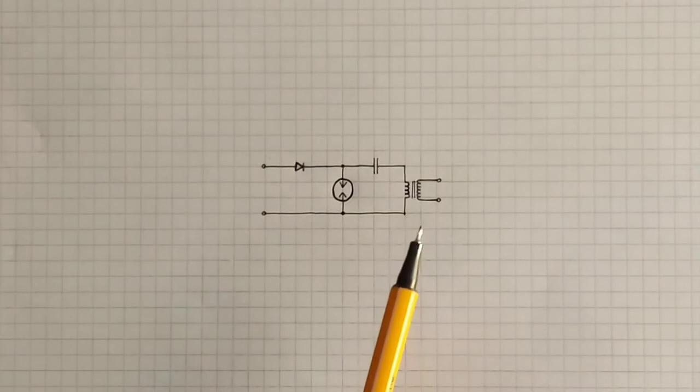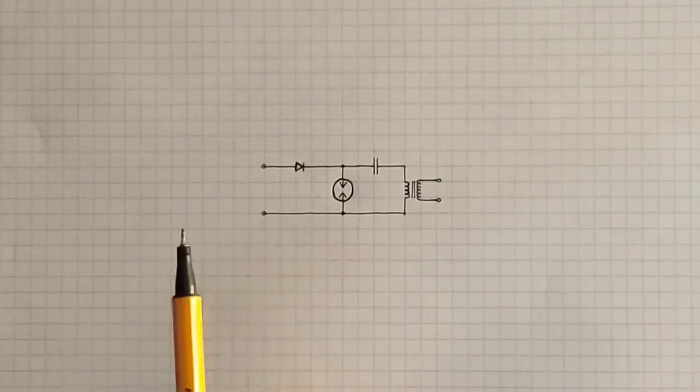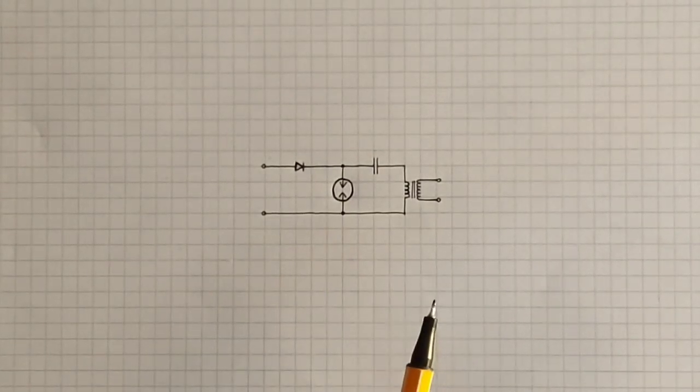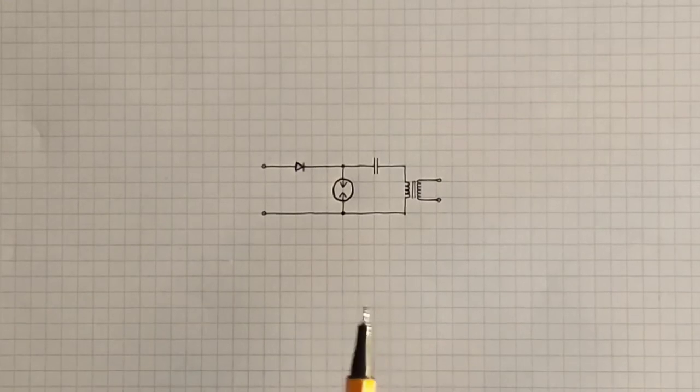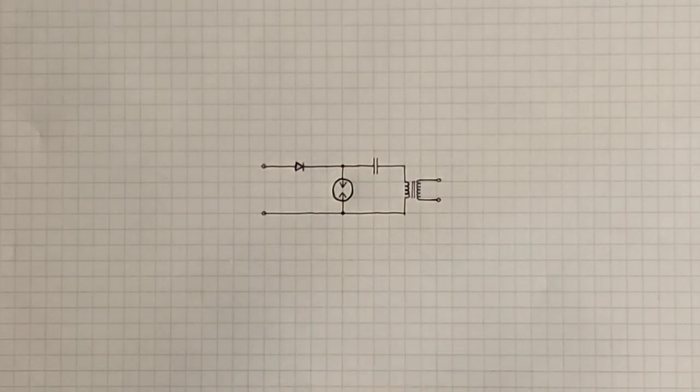And the capacitor and the coil form an LC circuit. This causes oscillations, and these oscillations cause the voltage induced in the secondary. Okay, back to the real circuit.